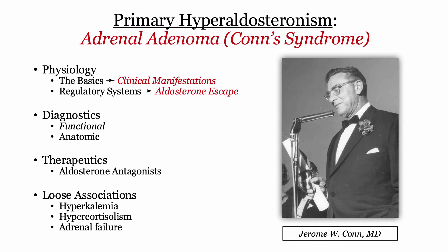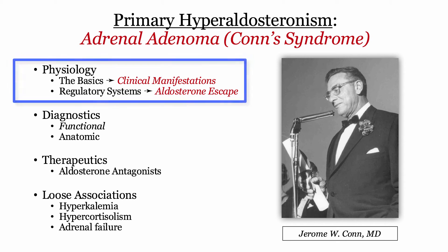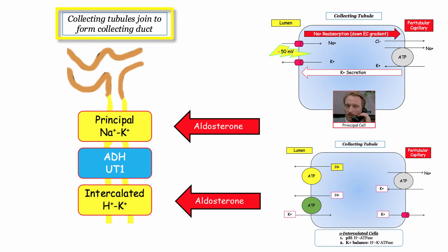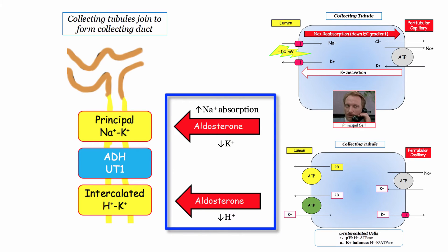Presented here is the roadmap for our discussion. We'll open up with a review of the basic physiology. If you understand the physiology, you understand the entity and the key Step 1 derivatives. Here's an artist's rendition of the nephron, shown just to target our discussion on the site of action, which is the collecting tubules. Aldosterone exerts its effects by acting at two sites, the principal and alpha-intercalated cells. Aldosterone drives sodium absorption with wasting of potassium and hydrogen ions.